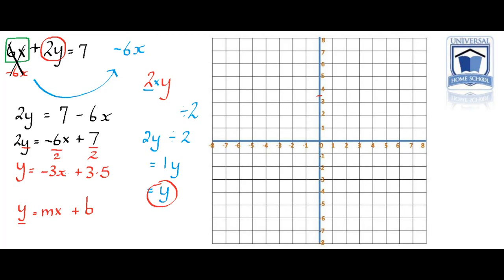Let's plot it on the graph here. The 3.5 is the b, that's the slope intercept. That's at 3.5, between the 3 and the 4. And then we have our negative 3 slope. And there's our line.